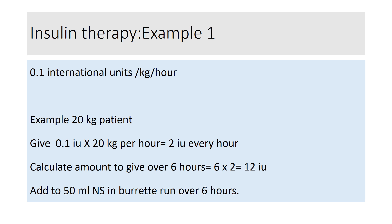For insulin dosing, we give 0.1 international units per kg per hour as an intravenous infusion — not IV push. For a 20 kg patient, that is 2 international units per hour. Over 6 hours, that is 12 units, which we place into 50 mls of normal saline in a burette, then run using an infusion pump over 6 hours to deliver 2 international units per hour.